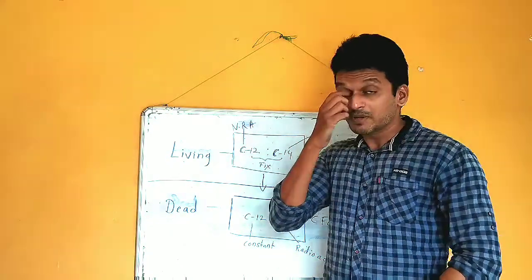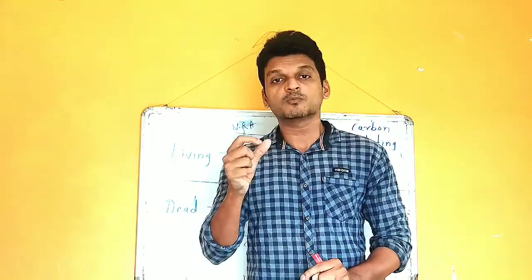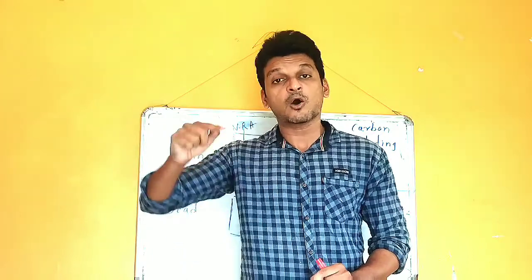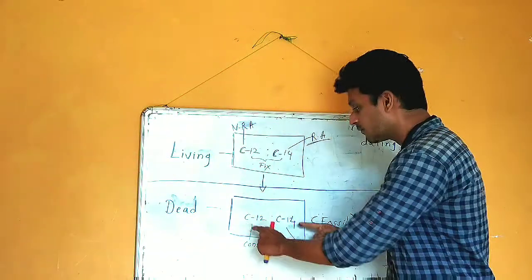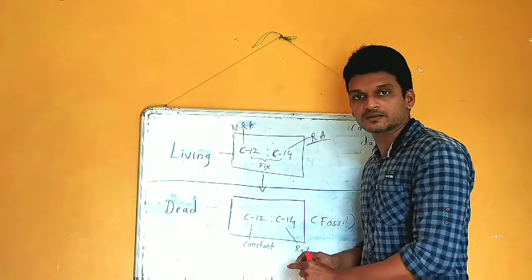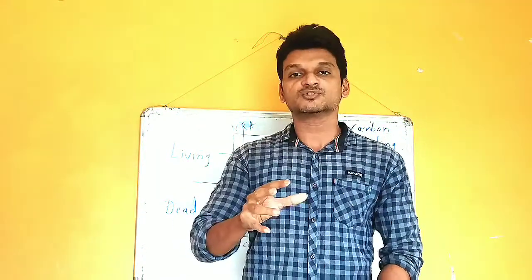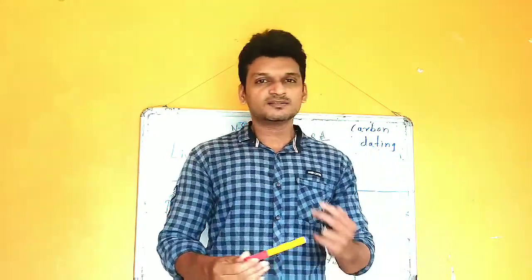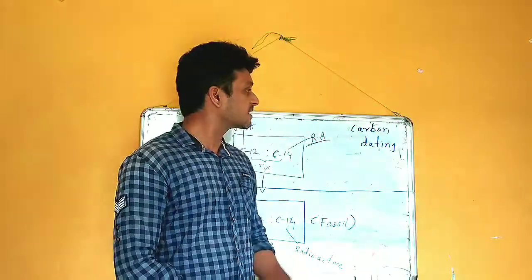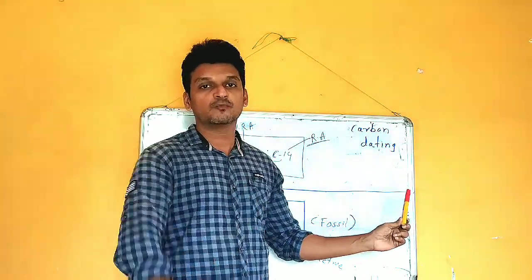By measurement of the radioactivity of carbon-14 and the ratio of carbon-12 to carbon-14, we can find out how many years ago the fossil died. In this way we can find out the approximate age of that fossil. This age is never perfectly accurate — it is approximate. This method is called carbon dating.